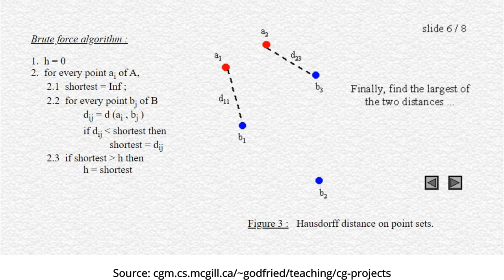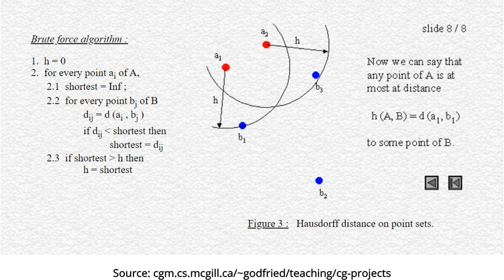...then finally we find the largest out of all those distances, and this distance is known as the Hausdorff distance. Hausdorff distance is considered to be more robust than Dice score and Jaccard score...